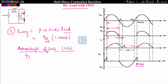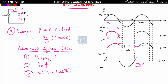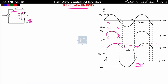To summarize the advantages of the freewheeling diode: first, V0 average increases; second, output power P0 equals V0_avg × I0_avg increases; third, continuous conduction mode is possible; and fourth, the input power factor improves. All these concepts are discussed in detail in lecture 9B.